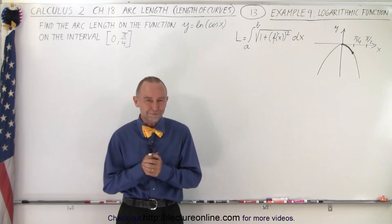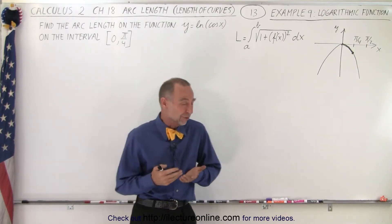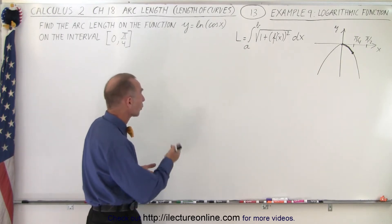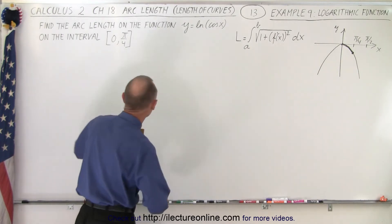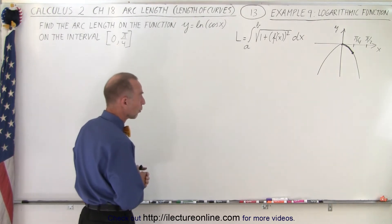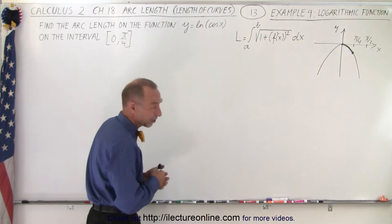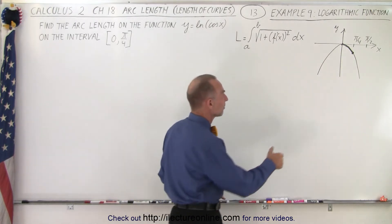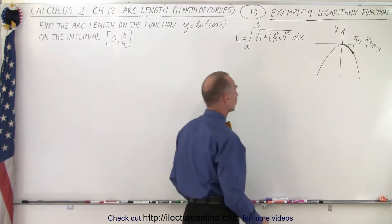Welcome to our lecture online. Our next function is kind of an interesting function: y equals the natural log of the cosine of x, and we're trying to find the arc length on the interval from x equals 0 to x equals pi over 4. The graph looks a little bit like a parabola, so we're trying to find the length of this piece right there on that curve.